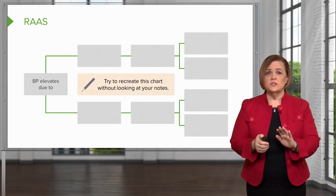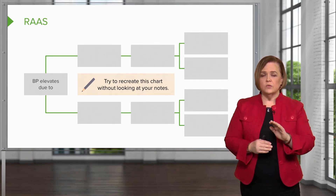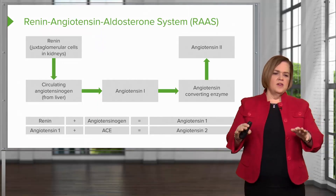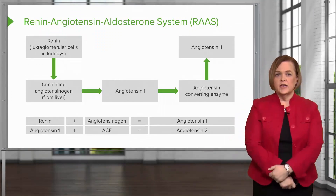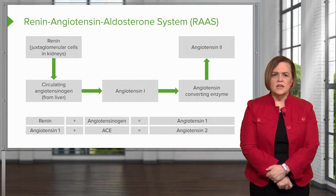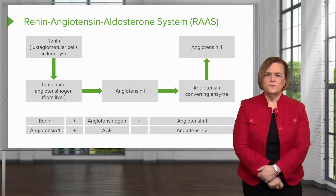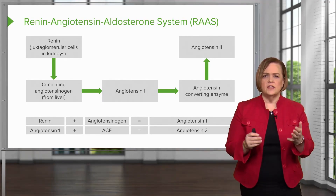Without looking at the screen, think through this diagram and see if you can recreate it from memory. Now let's pretend we have unlimited resources and finances and we're going to solve the problem of treating hypertension. If we look at this process like a flow chart — renin, angiotensinogen, angiotensin I, ACE, and angiotensin II — what kind of drugs could I design based on these steps? How could I interrupt or interfere with these steps so I don't make it all the way down to the action of angiotensin II?